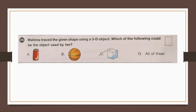Question number 25: Mahima traced the given shape using a 3D object. Which of the following could be the object used by her? It's a square, and we can get the tracing of a square by using a cube. So our answer is option C.